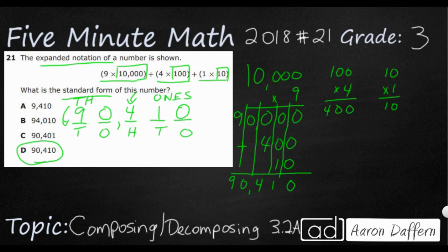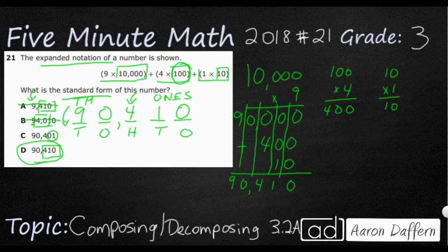Let's look at some of the incorrect answers. Our correct answer is 90,410. Answer A has 410 correct, but the 9 is in the thousands place instead of the ten thousands place — that's the error. Answer B has the 9 and 1 correct, but the 4 is in the thousands place; since it's 4 times 100, it should be in the hundreds place. Answer C is almost correct, but the 1 is placed in the ones position — the 1 is times ten, not times one — so that's why C is incorrect.